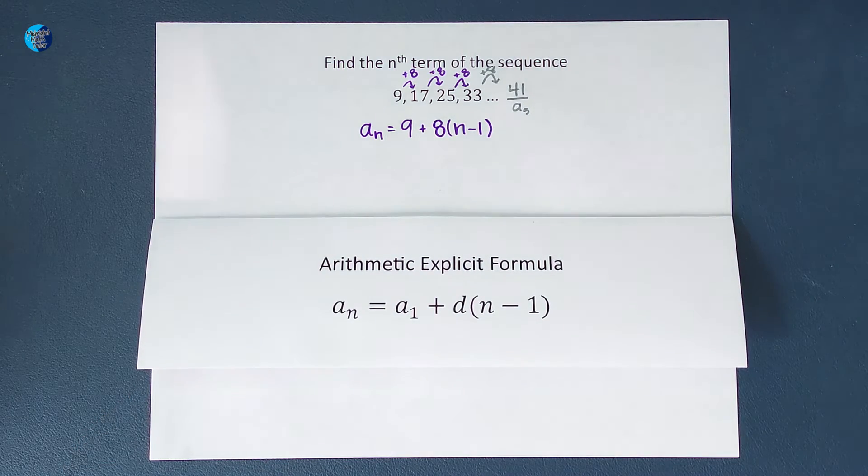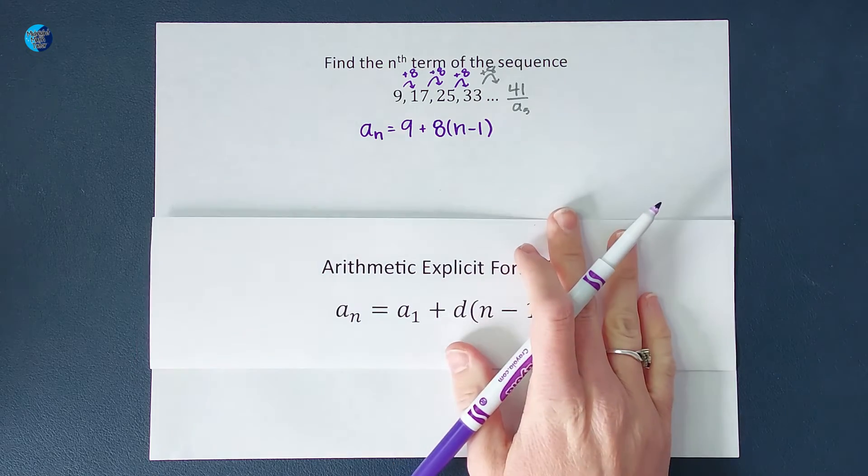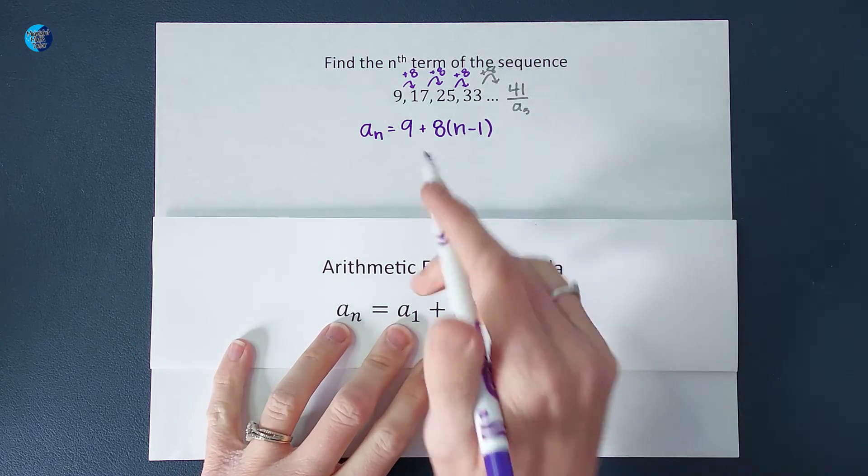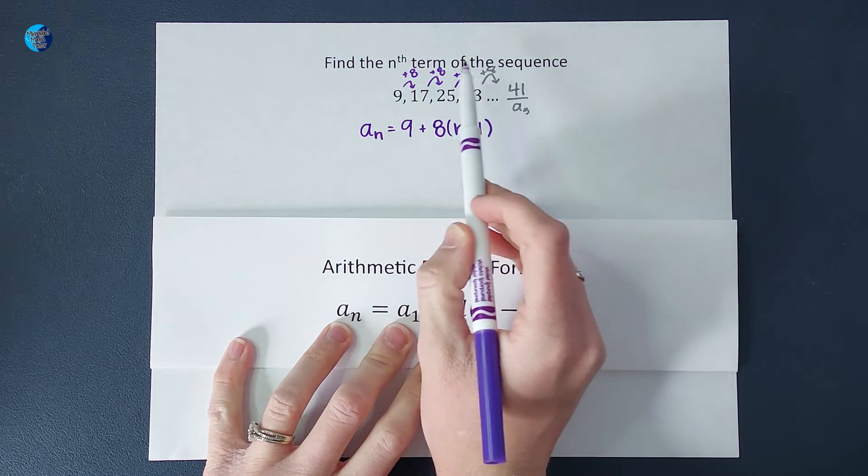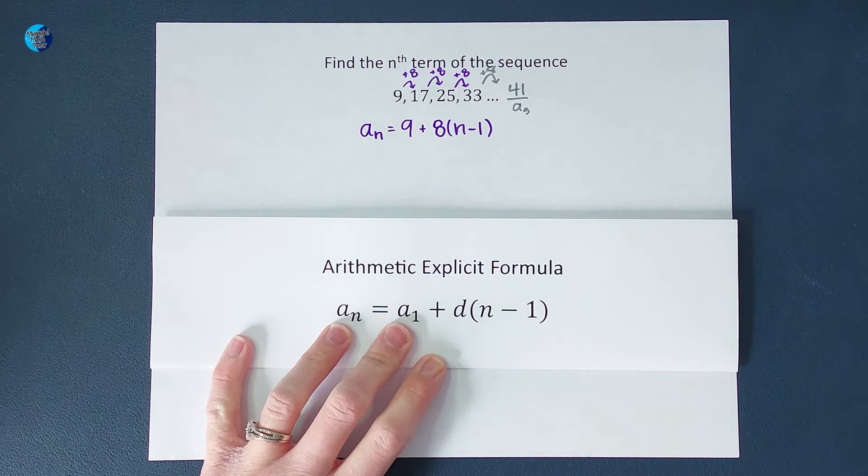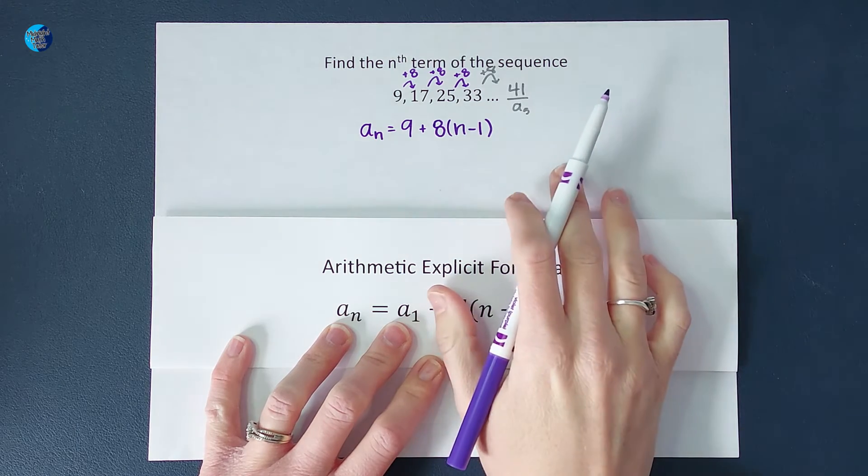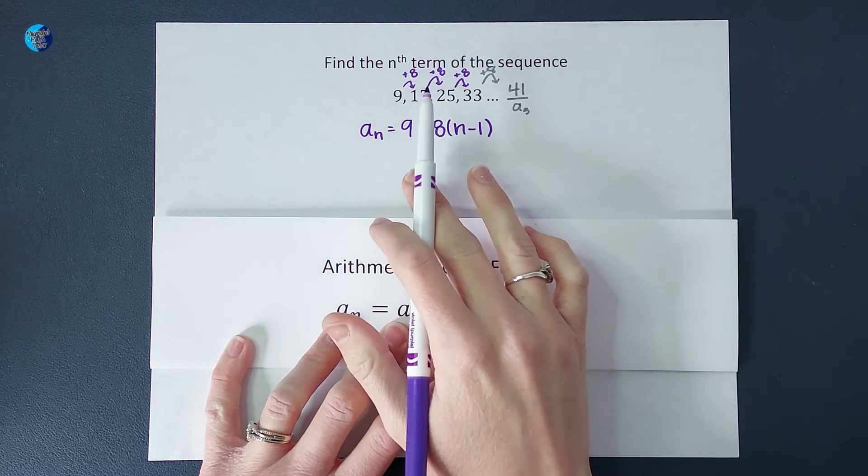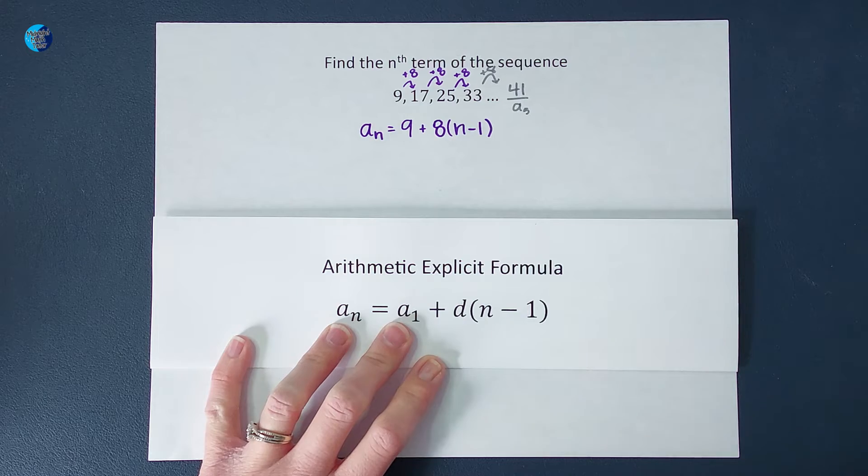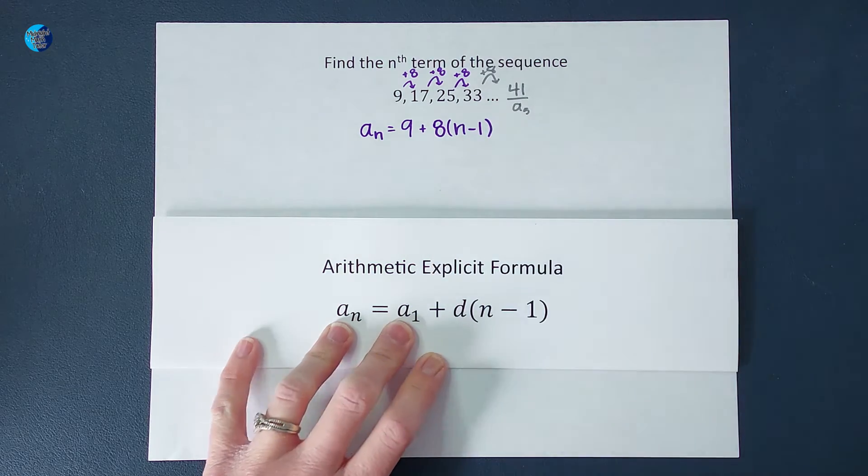So to find the fifth number in that sequence, how many times did I add 8? I added 8 four times. One less time than the number I wanted to find. So if I wanted to find the hundredth number, I would have added 8 99 times. So that is where that n minus 1 comes in.